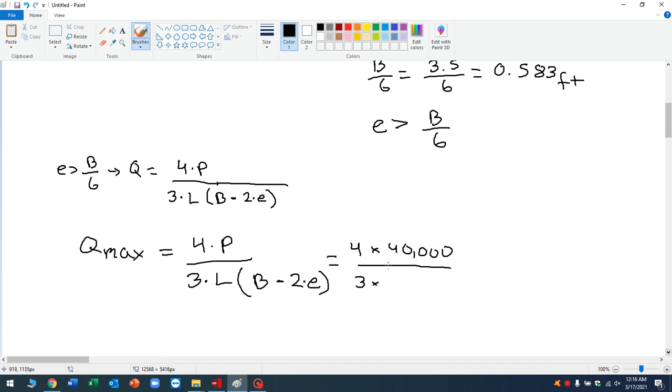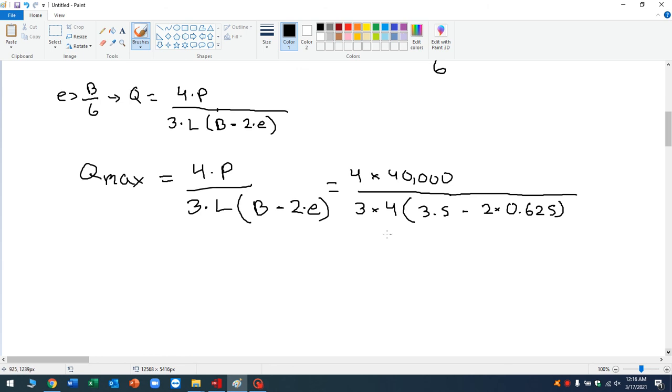And now in parentheses, we're going to have 3.5 minus 2 times the eccentricity. So let's do 2 times, and your eccentricity was 0.625. So if you put this in the calculator, what are you going to get? Your Q max is, one second, let me type this out.